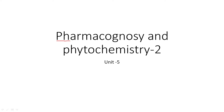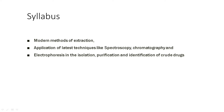Welcome to Pharmacognosy and Phytochemistry 2, Unit 5. We will see the full details of Unit 5, covering an overview of: first, Modern Methods of Extraction; second, Spectroscopy; third, Chromatography; and Electrophoresis. We will see all the details in these topics.